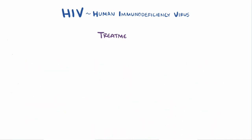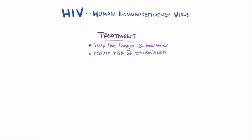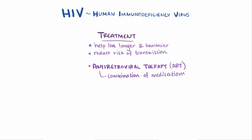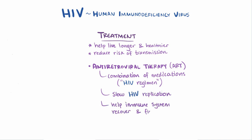There is currently no cure for AIDS. However, treatment can help people with AIDS live longer, healthier lives and reduce the risk of transmission. The primary method is antiretroviral therapy, or ART. ART is not a single medicine but a combination of medicines known as an HIV regimen, which helps slow down HIV replication, giving the immune system a chance to recover and fight off other infections more effectively.